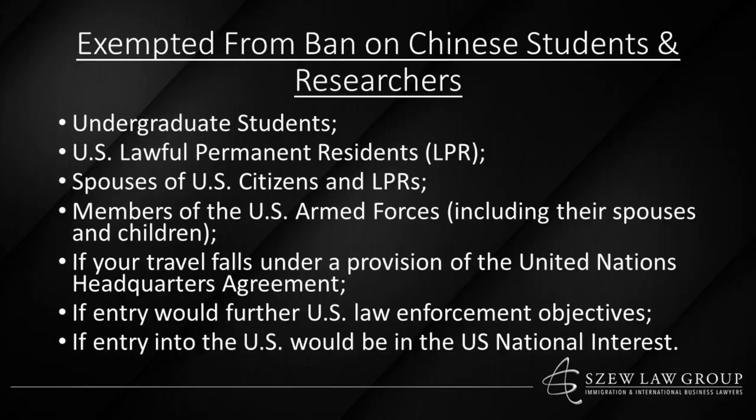There are also other exemptions to the actual proclamation. It does not apply to undergraduate students — only to graduate-level and higher students and researchers. It doesn't apply to lawful permanent residents of the United States, or spouses of United States citizens or lawful permanent residents. It also doesn't apply to U.S. armed forces members, or any foreign nationals who are a spouse or child of a member of the U.S. armed forces. There are many limitations — not only the fact that it is limited to people associated with certain entities in China, but it also does not relate to a number of other individuals who might be applying for an F visa or J visa.